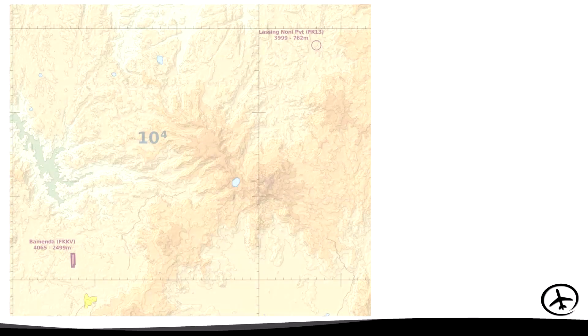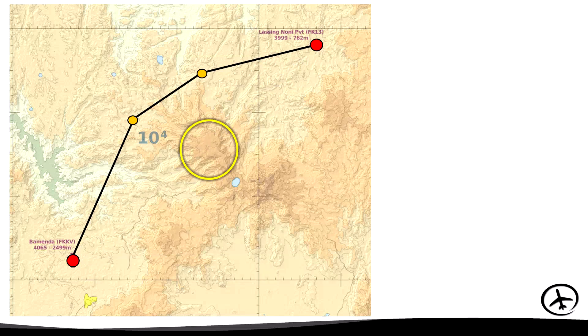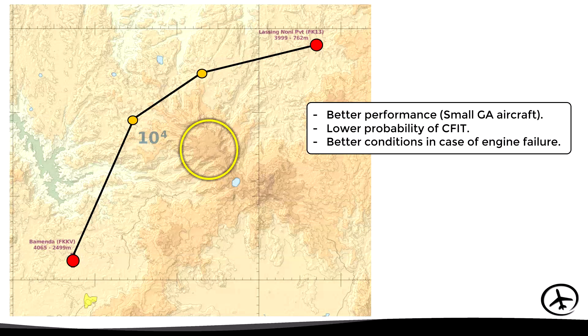Let's see a practical example. We are planning a VFR flight between two airports. If we plan a direct route, it involves flying over very high terrain which can reach up to 10,000 feet of elevation, as shown in the maximum elevation figure on the chart. Considering that it is a relatively short flight in a small general aviation aircraft, it would be wiser to choose a route around the mountain over lower terrain, which results in better aircraft performance, a lower probability of controlled flight into terrain, and better conditions in case of an engine failure.